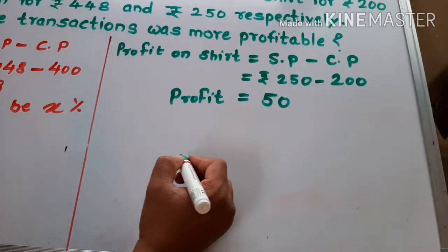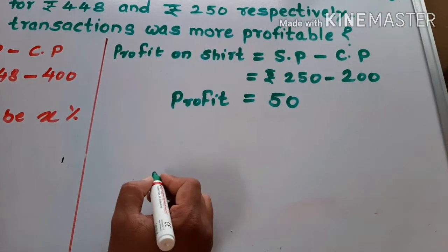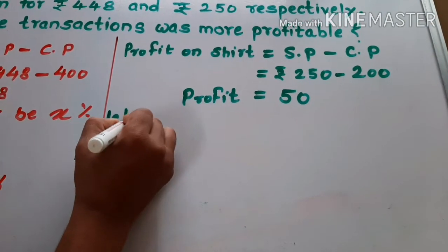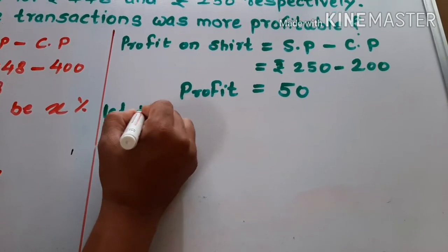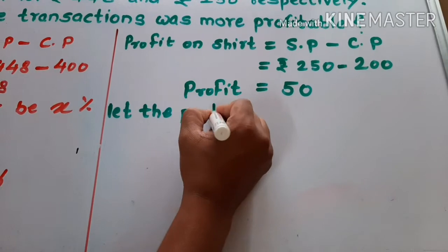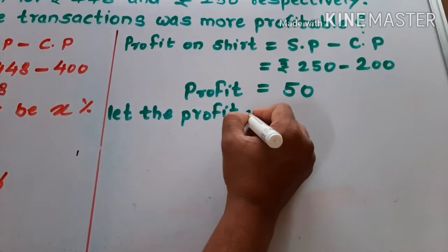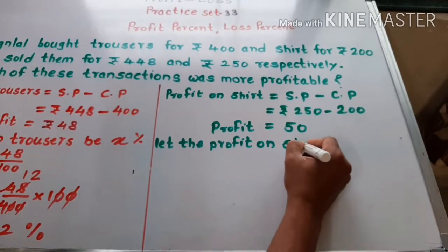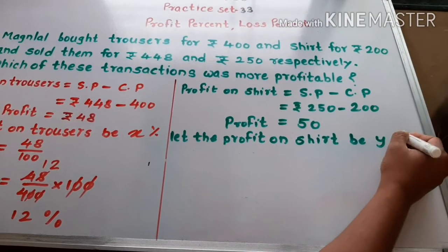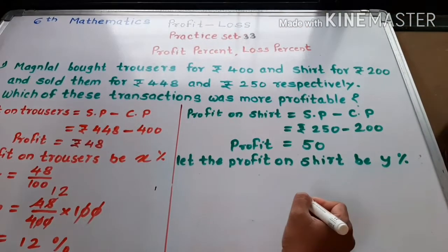Then find which transaction was more profitable. Let the profit on shirt be Y percent.